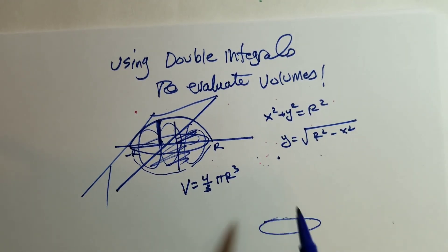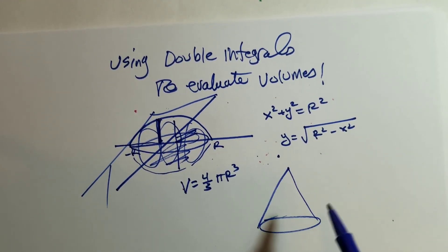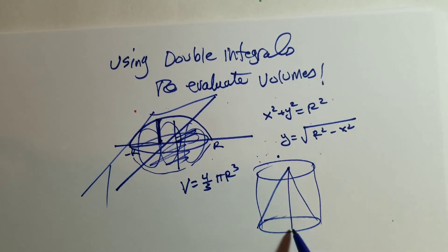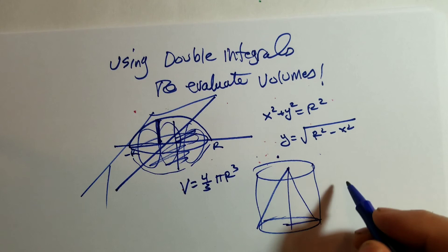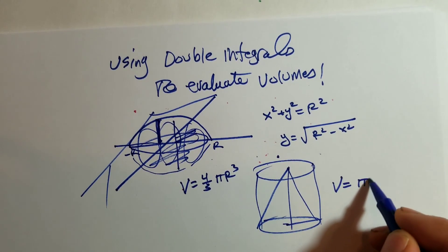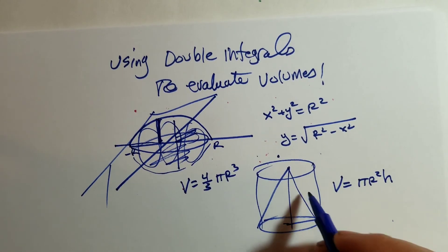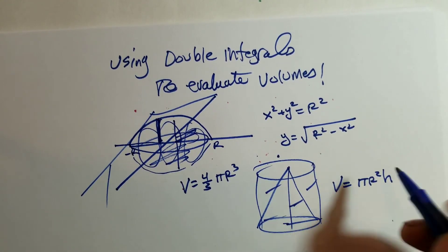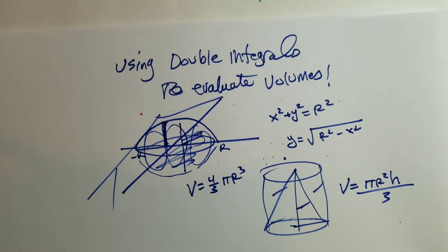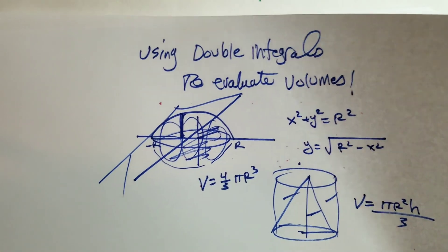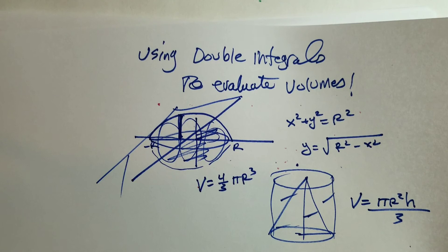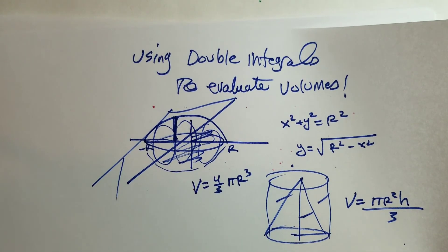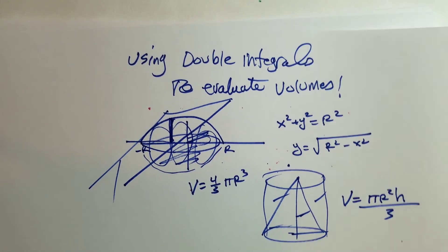Or what happens if I have a cone? The volume of a cone is one-third the volume of a cylinder with the same height and base radius: pi r squared times height divided by three. But what happens if I give you a solid that is not geometrically built and it's not regular?